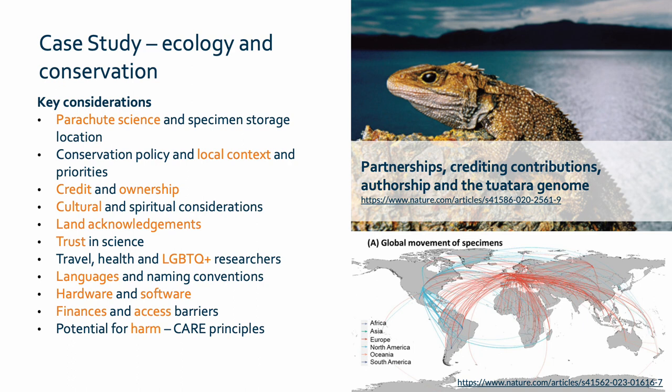Appropriate crediting is again vital, including land acknowledgements where appropriate, as is ensuring cultural and spiritual aspects of the natural environment are properly respected and accounted for in research design. Travel can also act as a barrier to many research staff with health concerns or those who are members of the LGBTQ+ community. Equitable data collection processes which enable local involvement can also improve the participation dynamics for researchers from outside those communities too.